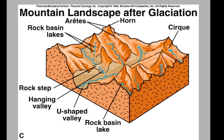Here is where two cirques are meeting, forming an arete. Where three cirques meet, you get a horn. The hanging valley is where we see a truncated spur — the glacier truncated this ridge. The hanging valley sits where a tributary once joined the main valley river, but now it's been undercut, making this waterfall hanging valley.